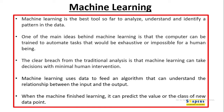A traditional program stops working when the input data differs from what has been defined, whereas machine learning tries to understand the relationship between the input and the expected output, and develops the algorithm accordingly. There is a training phase where the algorithm is shown different types of data so that it learns and understands the different possibilities of input data. The advantage is that human intervention is reduced significantly.